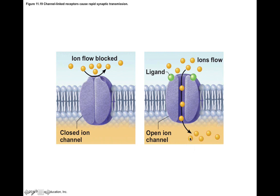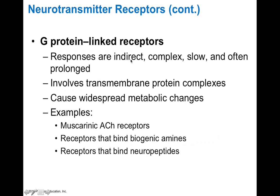G-protein coupled receptors involve an indirect, more complex response that is slow but often prolonged. This involves transmembrane protein complexes where a neurotransmitter binds to a receptor and causes a molecular change in the shape of the receptor that initiates a chemical reaction within the cell. Examples of G-protein coupled receptors include muscarinic receptors and adrenergic receptors for adrenaline — those that respond to biogenic amines like epinephrine and norepinephrine, or even receptors for neuropeptides.